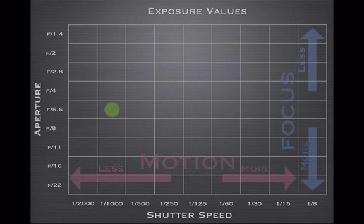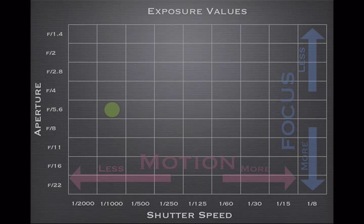There's a give-and-take relationship between these two settings. At around f1.4, you have a very low depth of field — in theory, someone's nose could be in focus while their eyes are out of focus. If you want to create a blurred background behind your subject, you would use a very wide aperture like f4 and below. Similarly, if you're taking a landscape photograph, you would use a very small aperture like f22 or f16 so that everything is in focus.